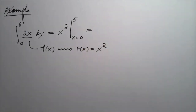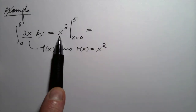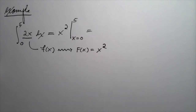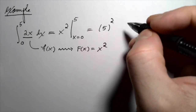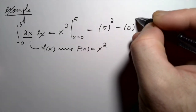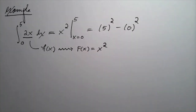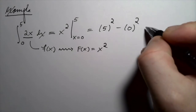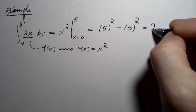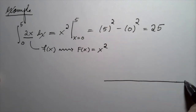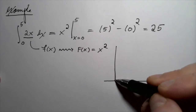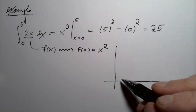This notation says evaluate x squared from x equals zero to five — that means the change in that function between zero and five. So take F of b, which is plugging five into the function, and subtract off F of a, which is plugging zero into the function. We get 25. In this case, that is the area under the curve — that is the integral. Since this function is just a nice linear function, we can actually double-check that the fundamental theorem is giving us the correct answer.